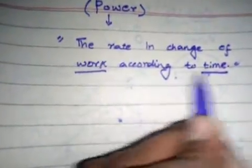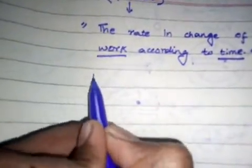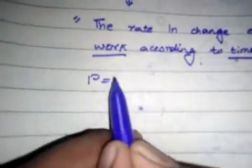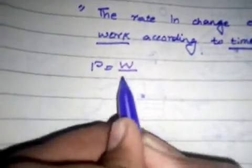So first of all, the formula. Now, power is equal to work over time. So P = W/t.